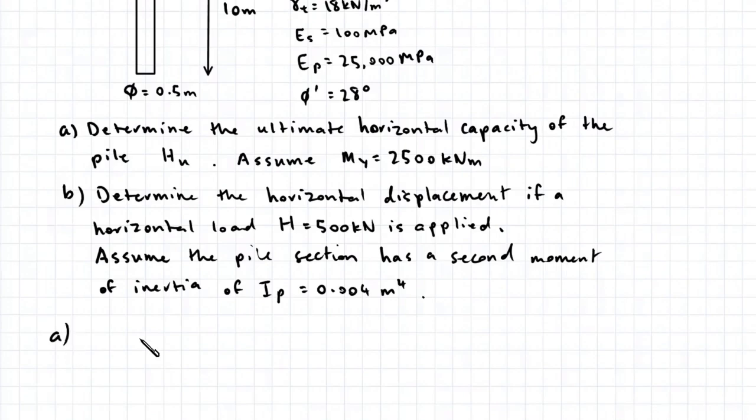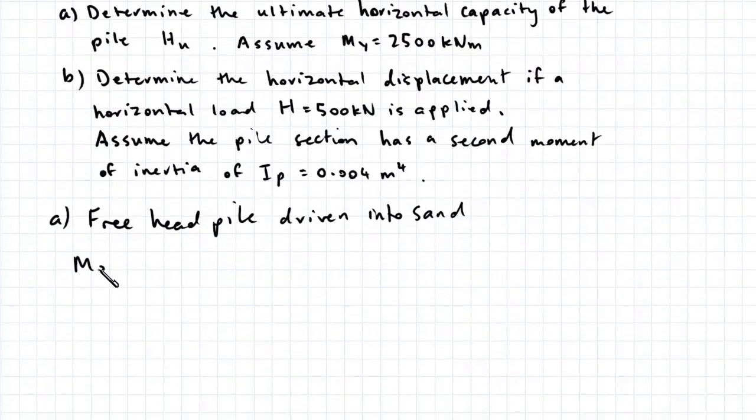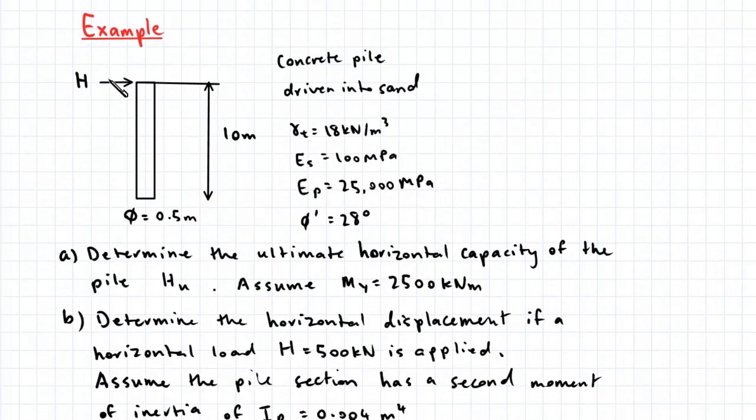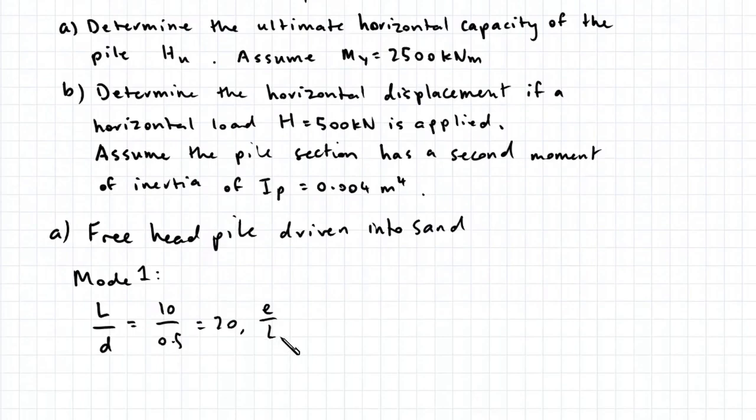So to start off, we have a free head pile driven into sand. We need to first consider failure mode 1. Let's find the ratio L on D. That's 10 divided by 0.5, which gives us 20. And E on D, that's the height of the horizontal force above the ground surface divided by the length of the pile. Because the horizontal force is applied at ground surface, E on L is equal to 0.